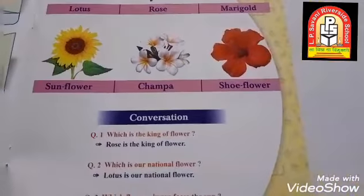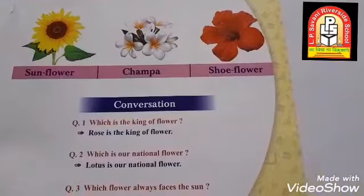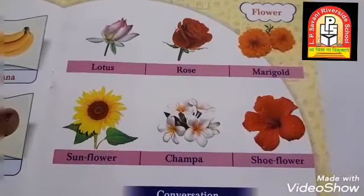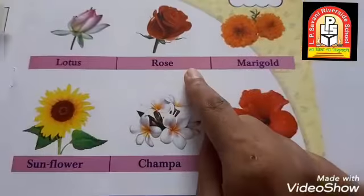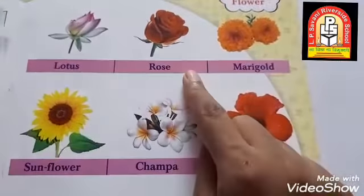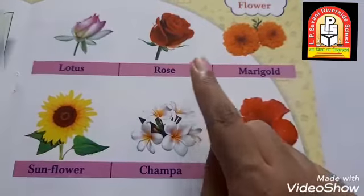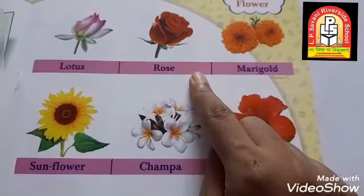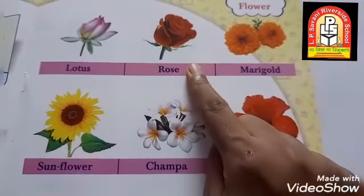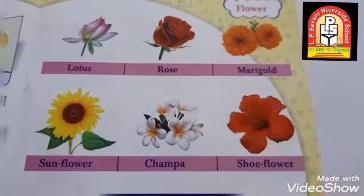We learn conversation. Which is the king of flower? Rose is the king of flower. This is rose. Which flower is this? This is rose. Rose is the king of flower.